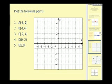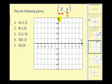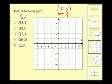Let's go ahead and try a few more of these. We want to plot the following points. The x-coordinate tells you whether to go left or right, and the y-coordinate tells you whether you need to go up or down, based upon the sign. For point A, which has coordinates negative 3, 2, since the x-coordinate is negative 3, we start at the origin and go left 3 units, and then up 2 units because the y-coordinate is positive 2, and we make a point. This would be point A.